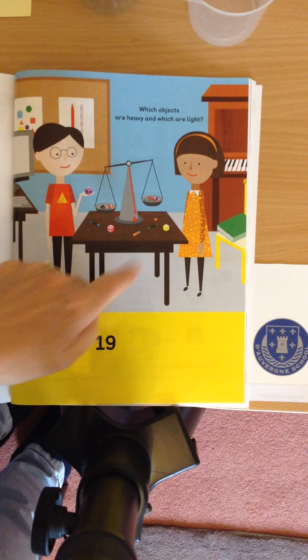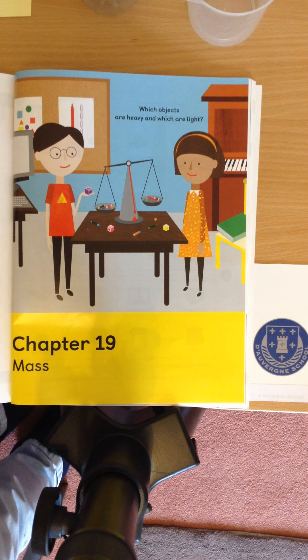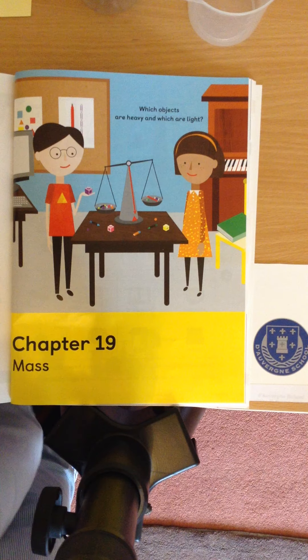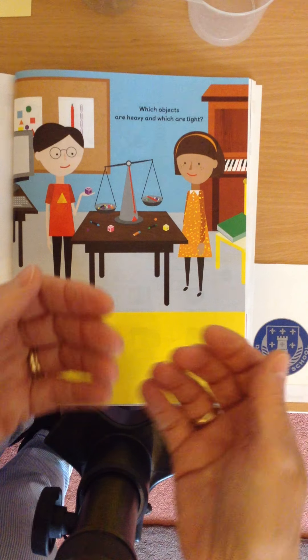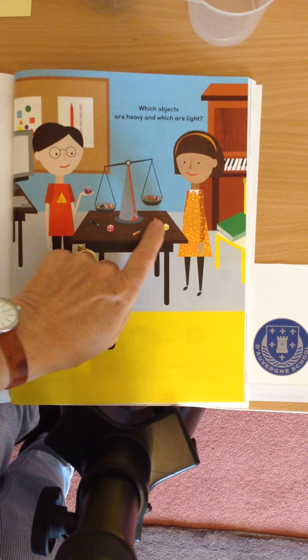Now you might not have one of these at home but you might have some weighing scales or you might just have to have a look and feel how heavy things are in your hands. And on the table are a variety of objects.